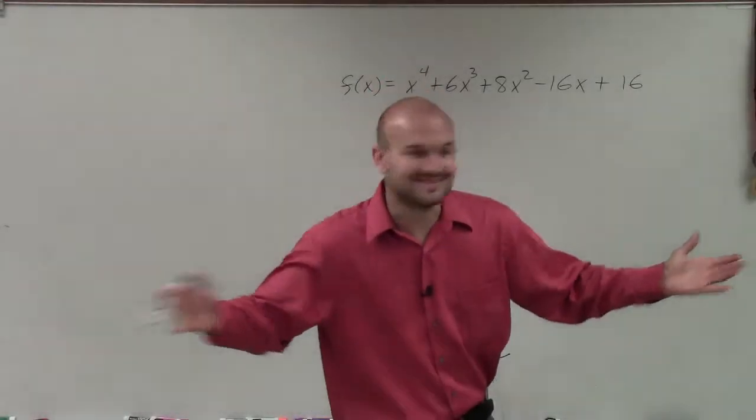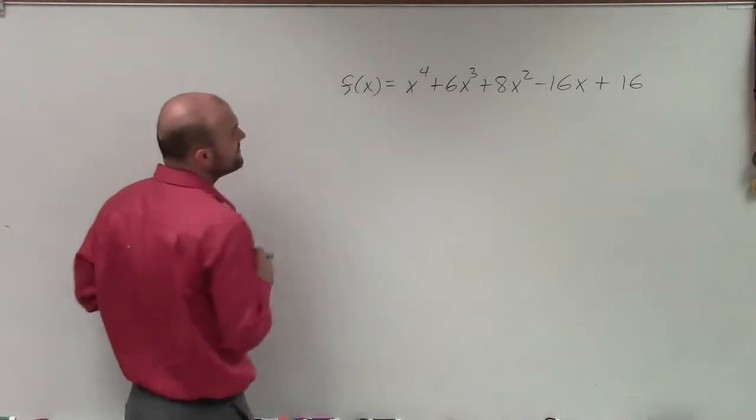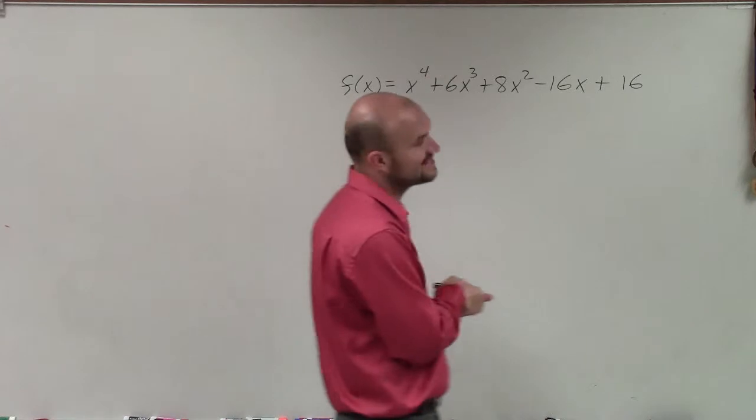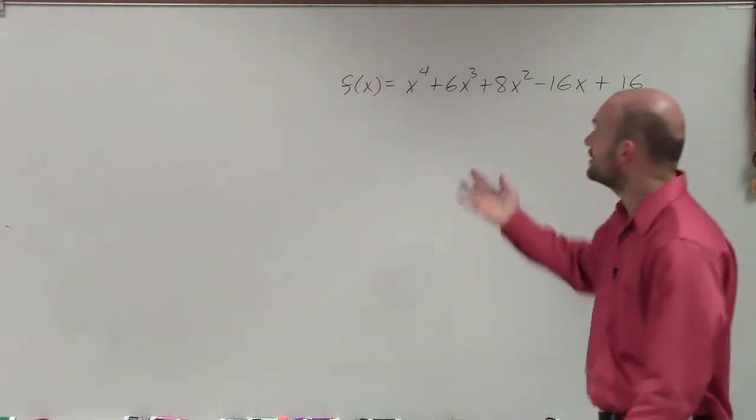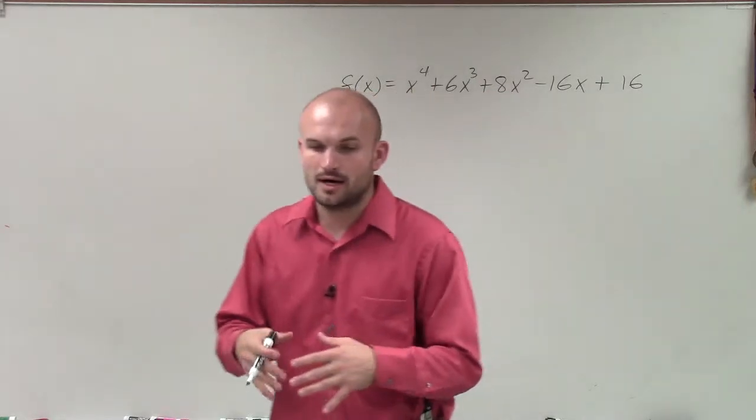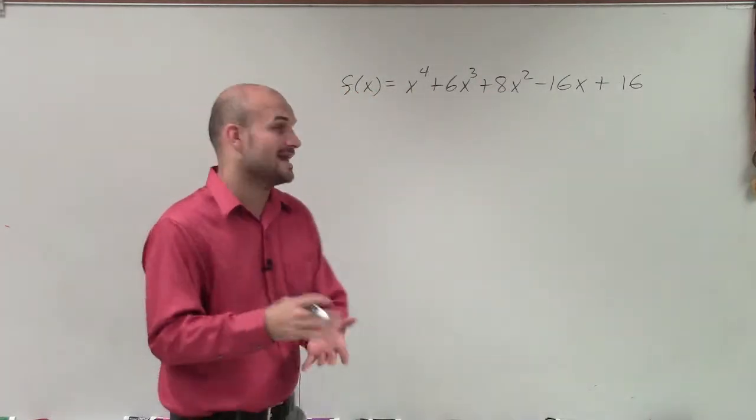Welcome. We have f(x) = x^4 + 6x^3 + 8x^2 - 16x + 16. I'd like to show you how to apply Descartes' rule of signs to determine the possible number of positive and negative real zeros.